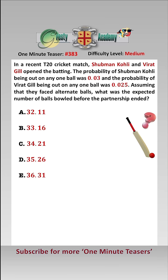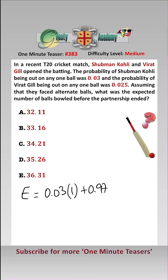We can use recursion to solve this. Let's call the number of expected balls E. That equals 0.03, which is the probability that Coley is out first ball — therefore that would be one ball — add 0.97, which is the probability that Coley is not out, times 0.025, which is the probability that Gill is out the first ball.